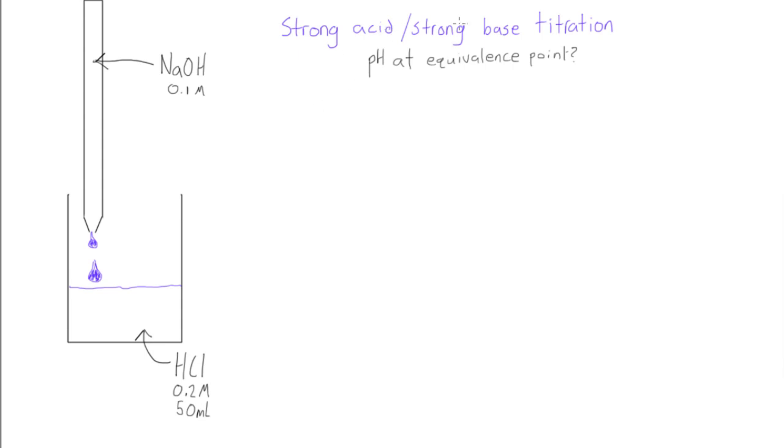This is part three of our strong acid strong base titration. We're looking to find the pH at the equivalence point, which is when we've had the same amount of moles of our acid and base reacting with each other.